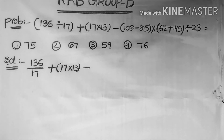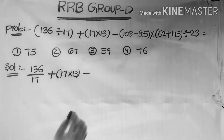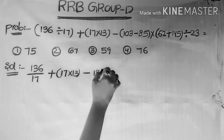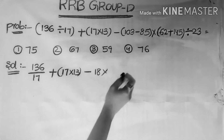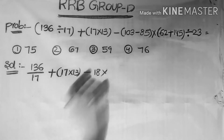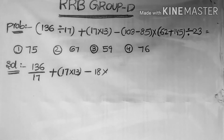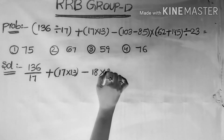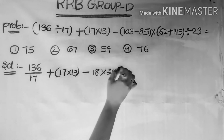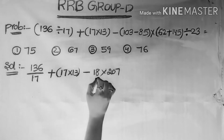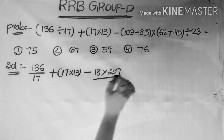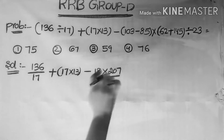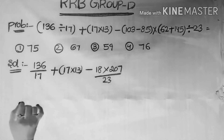103 minus 85 is equals to 18. So we get 18 into 62 plus 145, and 62 plus 145 is equals to 207, divided by 23.